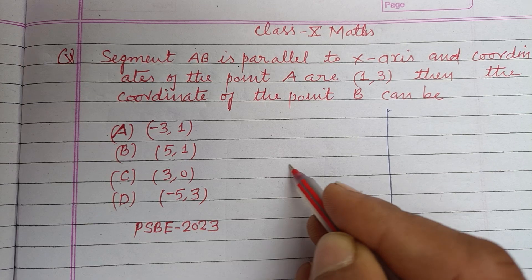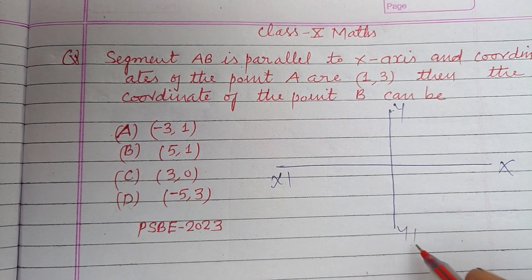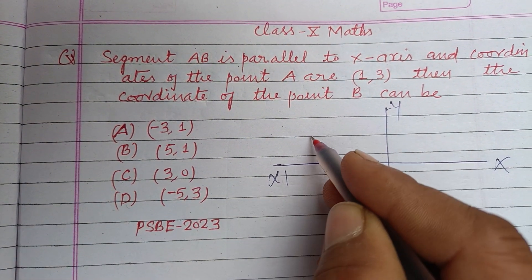So first we draw a Cartesian plane - this is x, x-dash, y, y-dash - and it is given that AB is a segment parallel to x-axis.